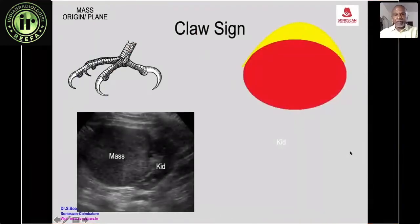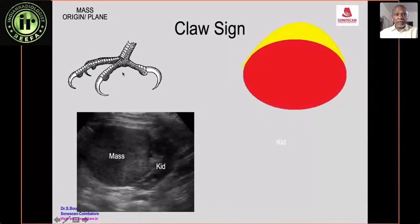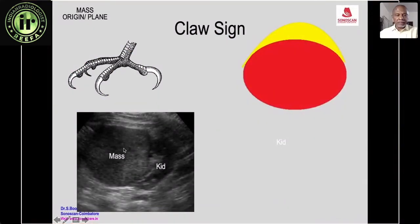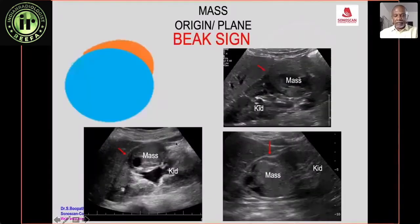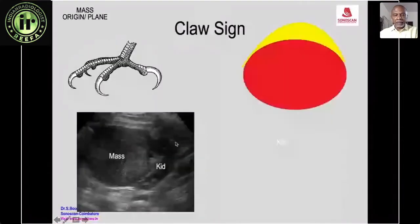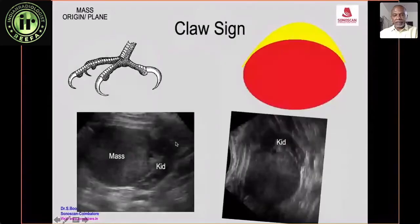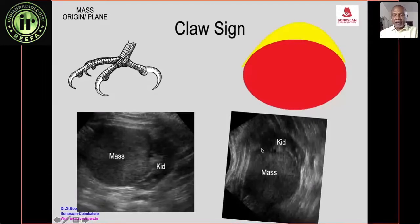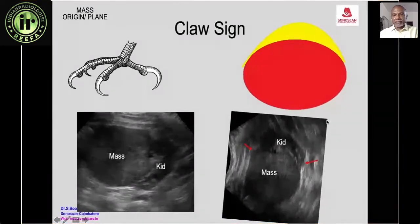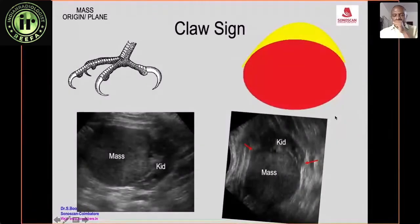The claw sign is essentially multiple beak signs. Here the kidney and mass are seen; inverting the image reveals the kidney forming claw-like beaks on both sides of the mass — similar to a claw. This confirms that the mass is arising from the kidney.